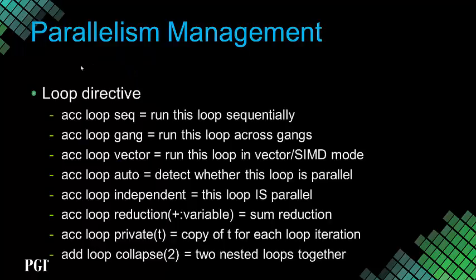The loop directive has several clauses: sequential tells it to run sequentially despite what the compiler thinks; gang, vector, or worker tells which parallelism level to use; auto tells the compiler to figure out what type of parallelism to apply and whether the loop is even parallel, using classical dependence analysis. Independent, reduction, private, and collapse are similar to their OpenMP equivalents.